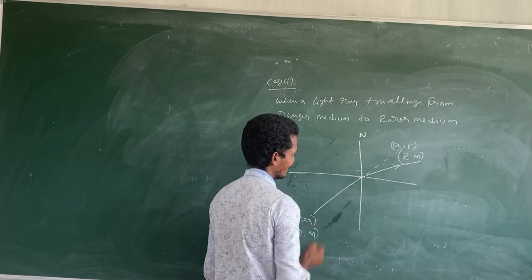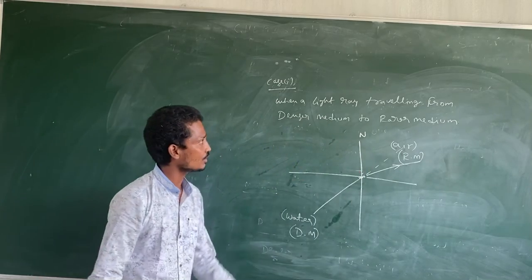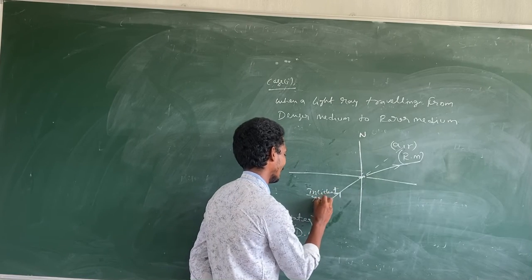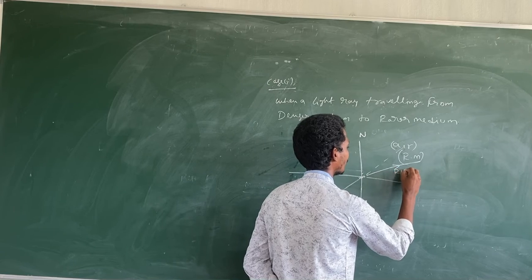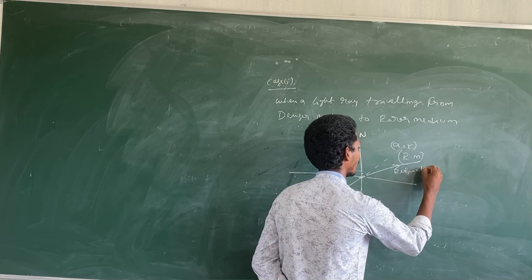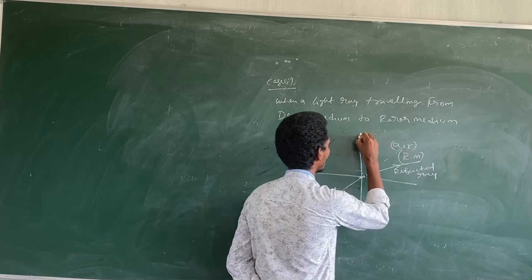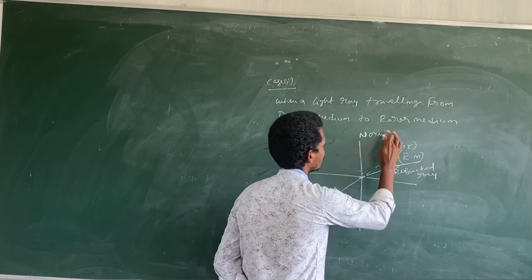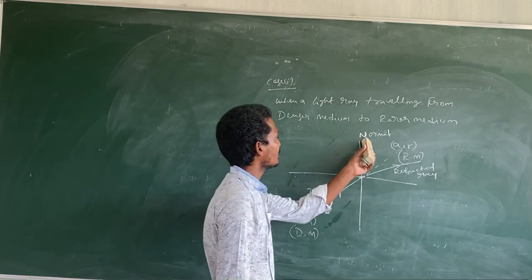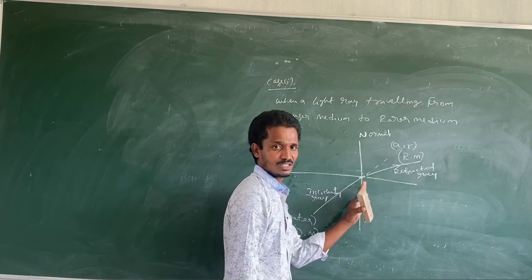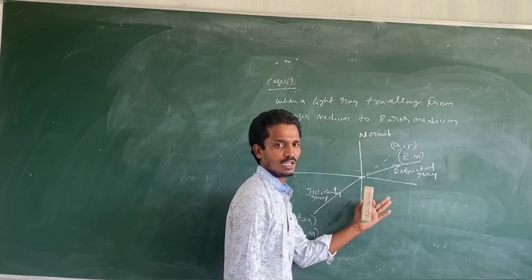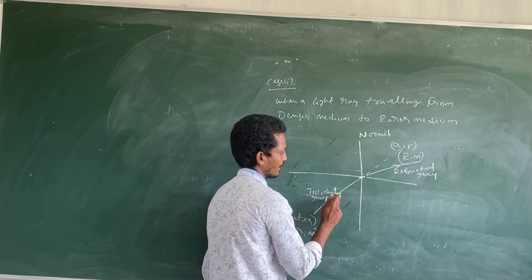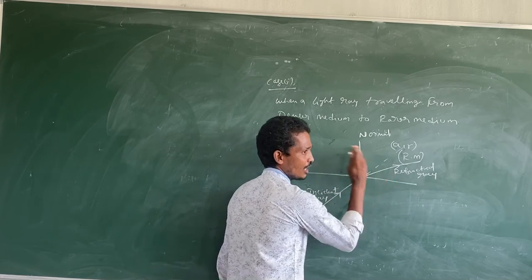This is the incident ray. This is the refracted ray. This is the normal ray. Normal means it is always perpendicular to the surface. When the light ray travels from the denser medium to the rarer medium, the light ray bends away from the normal.